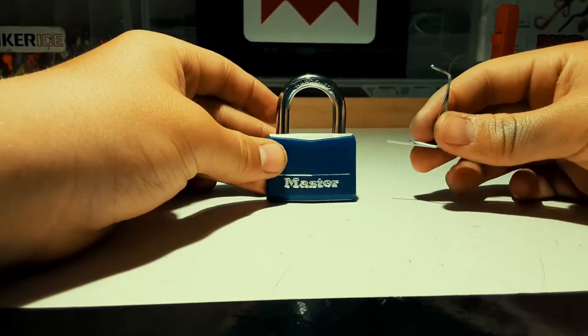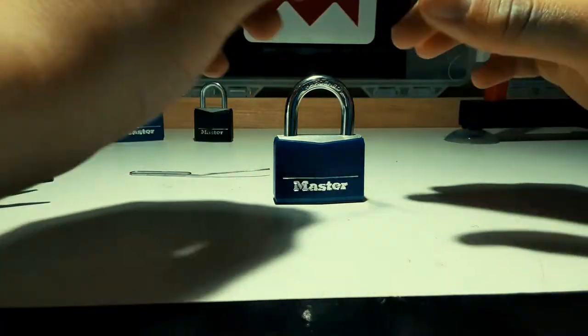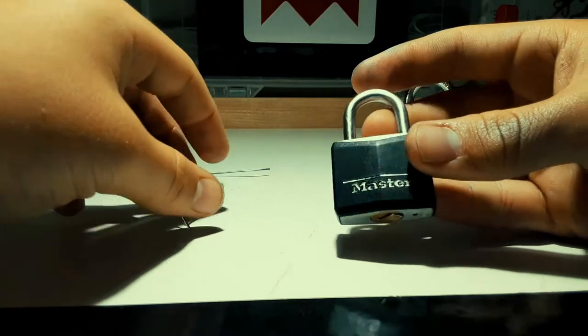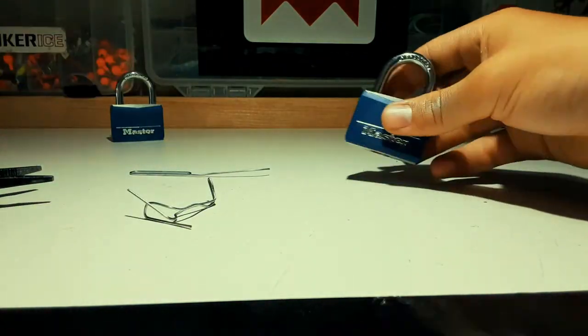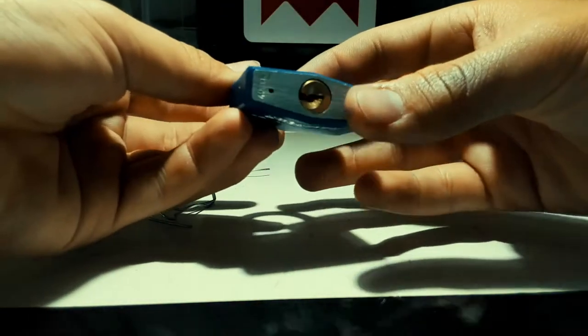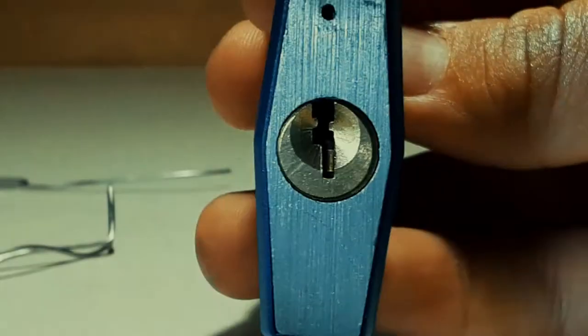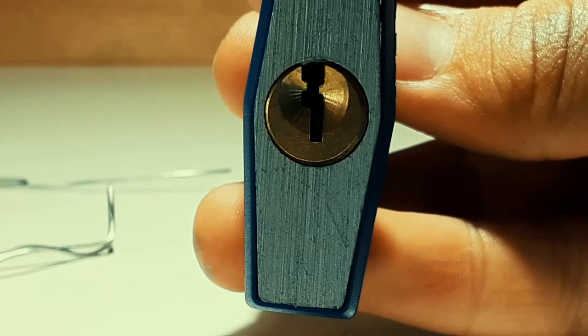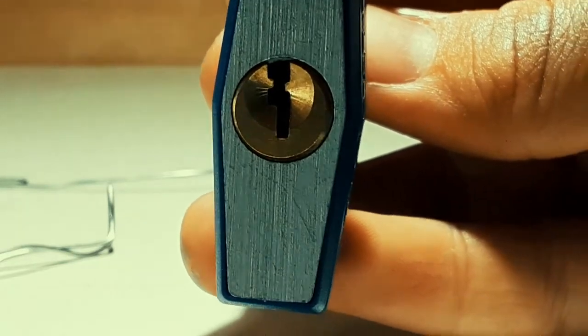So now you're getting into the lock picking side of things. For demonstration purposes I will use this and I'll use a blue lock just because it sticks out a little better. You can see inside of this there's that first pin and there'll be a bunch of those little pins inside of this lock.